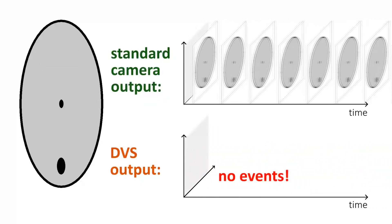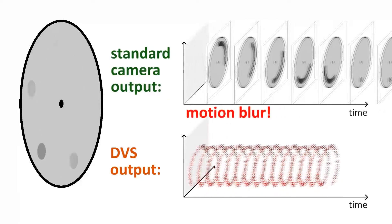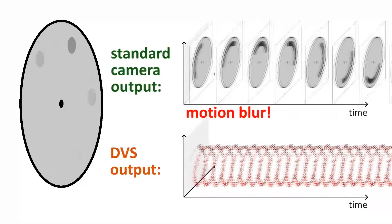These event cameras only collect the asynchronous intensity changes in light instead of traditional image frames, thereby enabling high speed computation and fast reaction times.